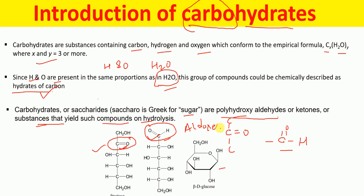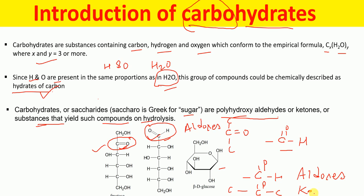If carbohydrates have an aldehyde functional group, they are called aldoses. If carbohydrates have a ketone functional group, they are called ketoses. So carbohydrates are polyhydroxy aldehydes or polyhydroxy ketones, or the substances that yield such compounds on hydrolysis.